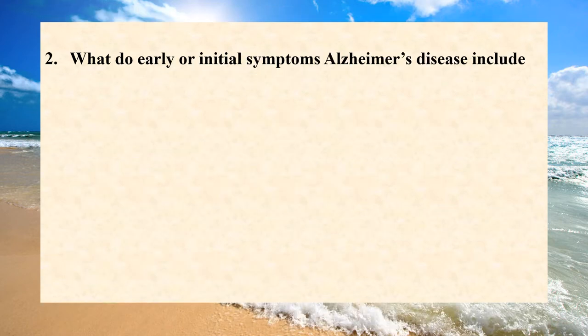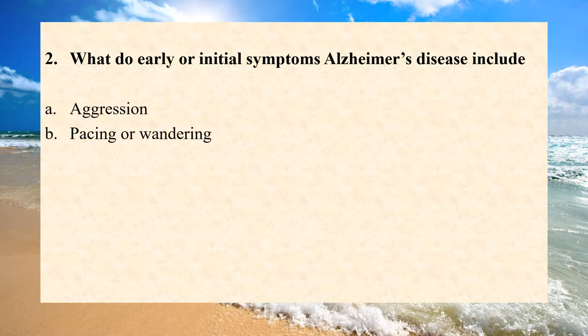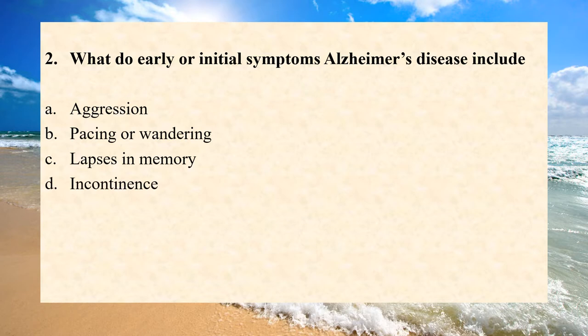What do early or initial symptoms of Alzheimer's disease include? A. Aggression. B. Pacing or wandering. C. Lapses in memory. D. Incontinence.